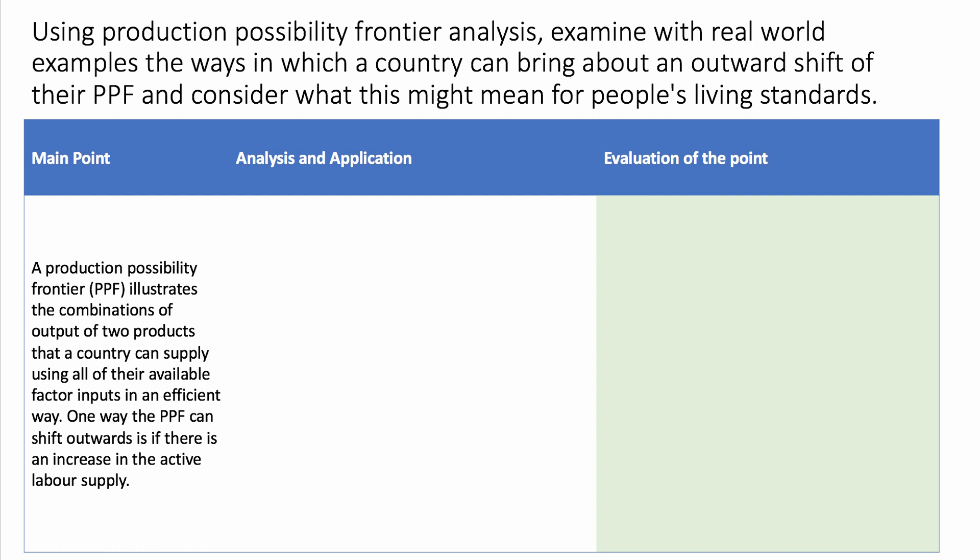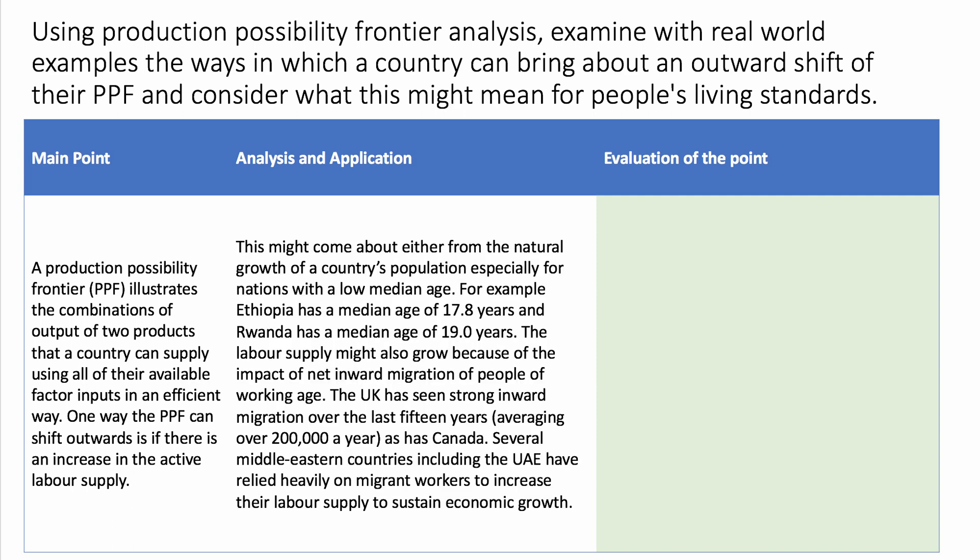One way the PPF can shift outwards is if there is an increase in the country's active labour supply — an increase in the quantity of labour available for production. This might come from the natural growth of a country's population, particularly in countries with a fairly low median age. Many of these are in sub-Saharan Africa; Ethiopia has a median age of less than 18 years, one of the lowest.